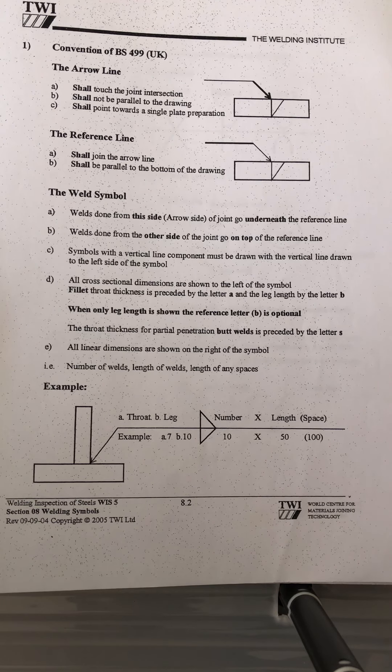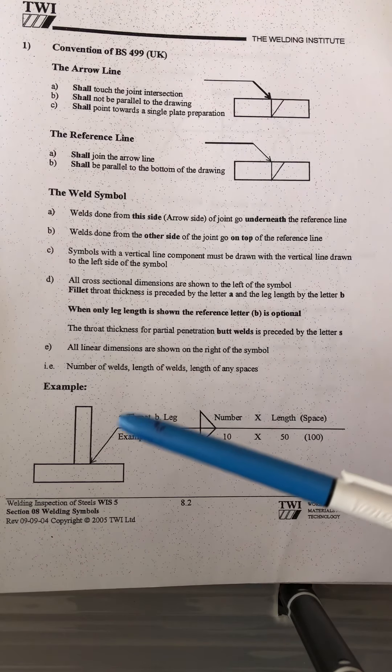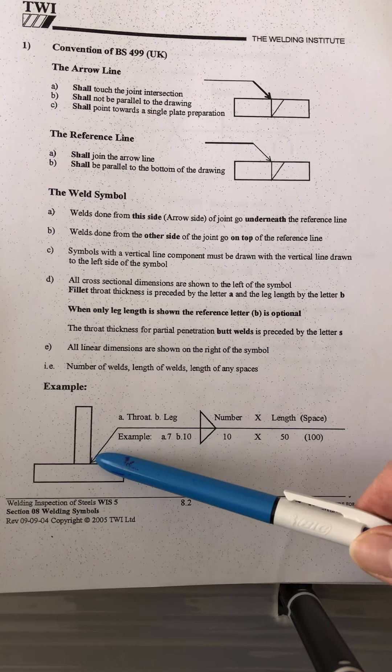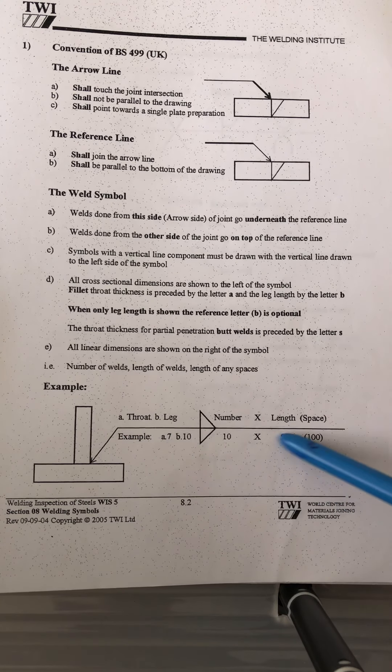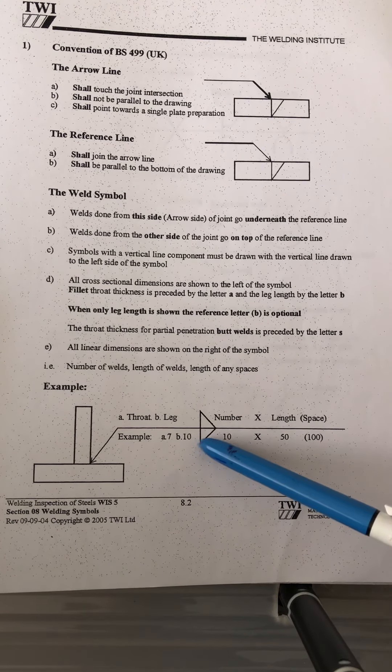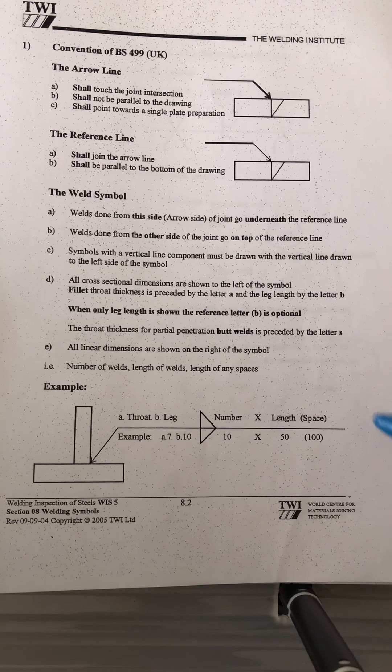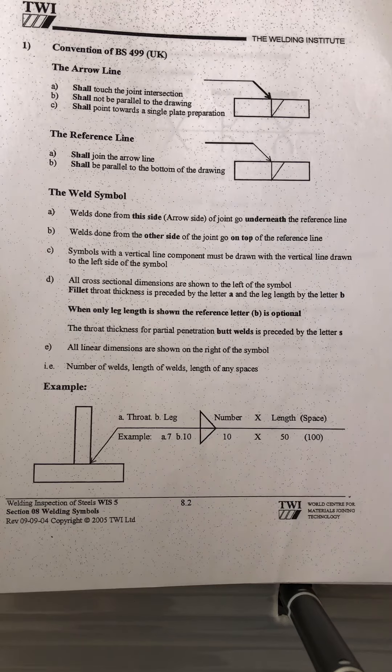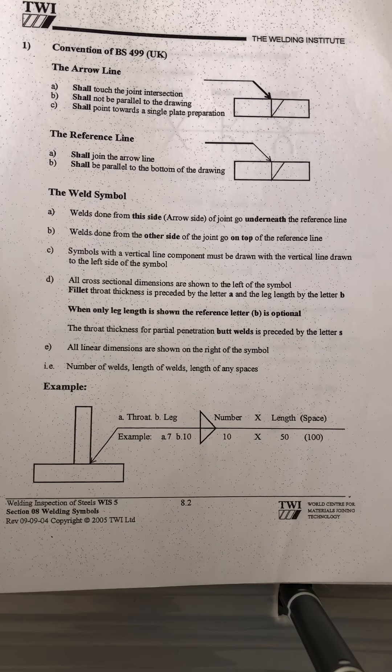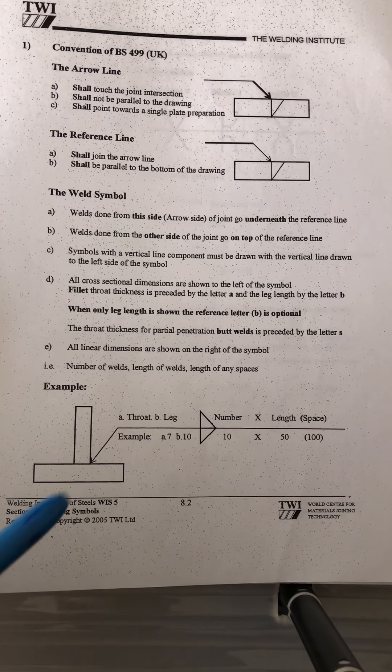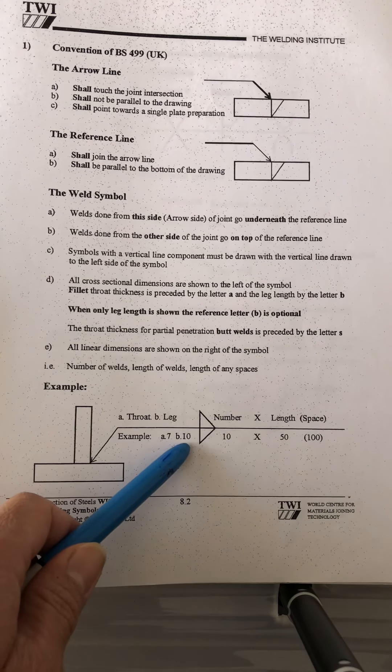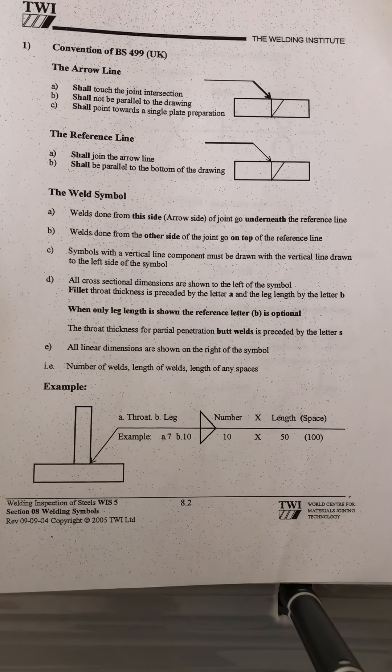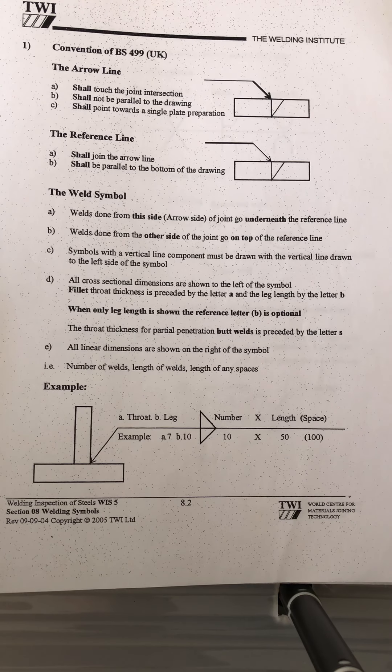I can show you that one later. In this one, for example, this is the reference line and this is a compound symbol for fillet weld. A is the actual throat or the actual thickness of the welding, and B, which is 10, is the height of the welding or the leg.